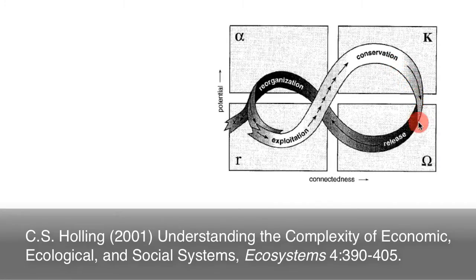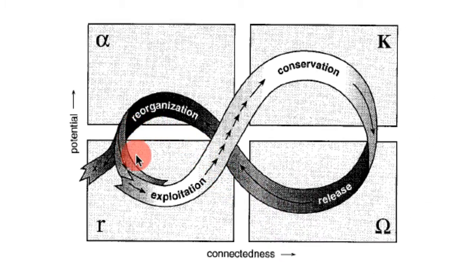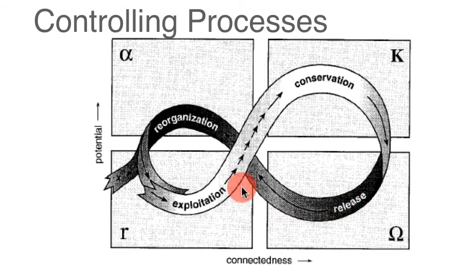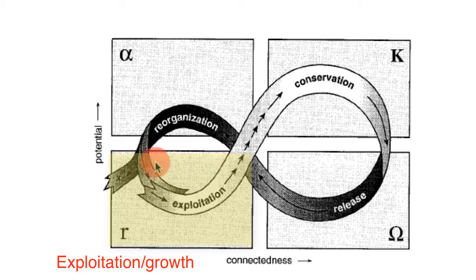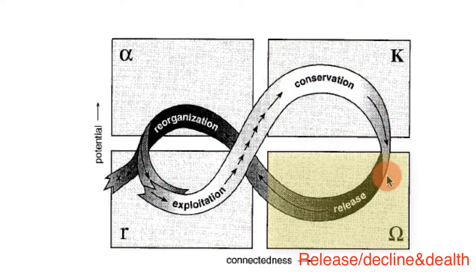Holling notes that the basis of ecosystems and social ecological systems are adaptive cycles where the behavior of the complex systems is governed by a small number of controlling processes. Together, these set of controlling processes form the framework of nature's rules.